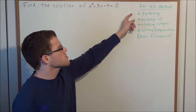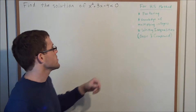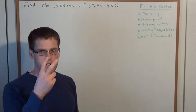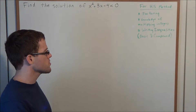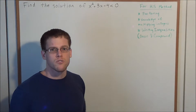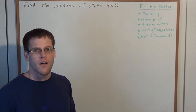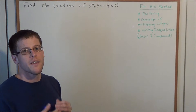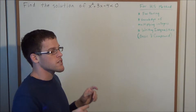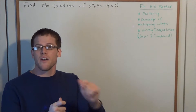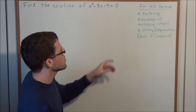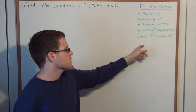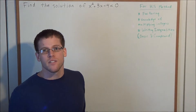So for now, we're going to need to be able to factor. In particular, we need to be able to factor this quadratic expression into two binomials. We also need some knowledge of multiplying integers — for instance, we need to know that the product of two negative numbers is a positive number, and that the product of a positive and a negative number is negative. We also need to be able to write an inequality, whether it be a basic or a compound inequality.